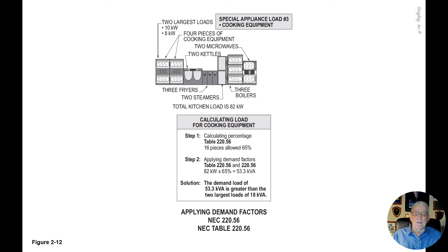Now we're ready to apply a demand factor for this type of equipment that may be in a restaurant or a cafeteria. To calculate the load for the cooking equipment, we apply Step 1 and use Table 220.56 to obtain our percentage. With 16 pieces of cooking equipment, Table 220.56 allows a 65% demand factor.